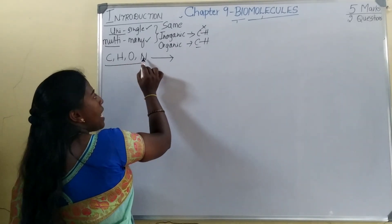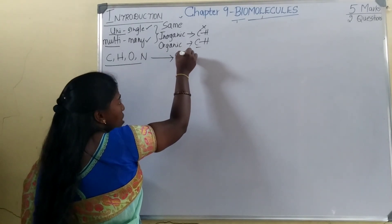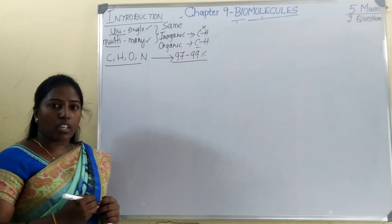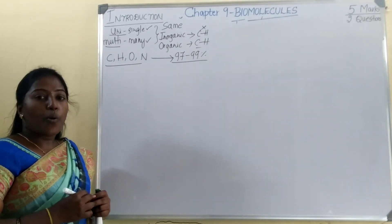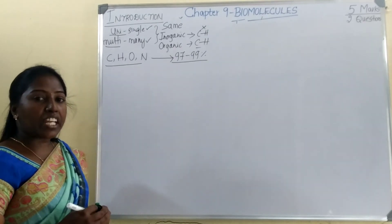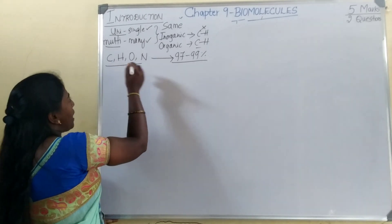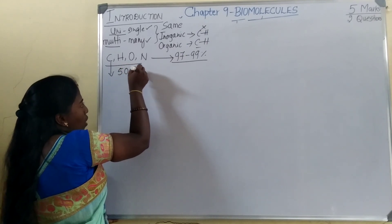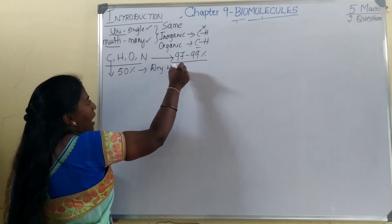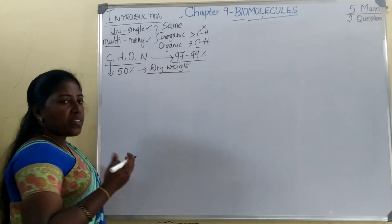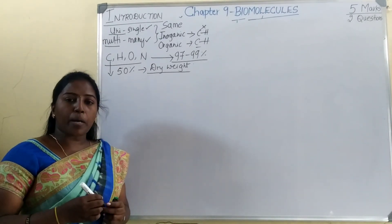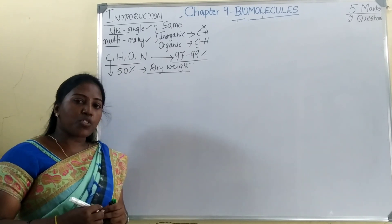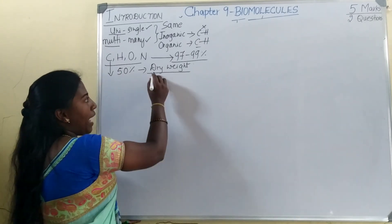Carbon, hydrogen, oxygen, and nitrogen contribute around 97 to 99 percentage of the body of a living organism. Of which, carbon forms more than 50 percentage of the dry weight of an organism. When we consider a tissue, it consists of some amount of water. The weight of the tissue with water is called wet weight, and the weight of the tissue without water content is called dry weight.